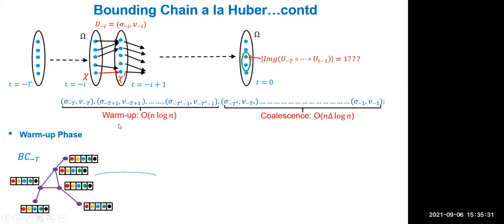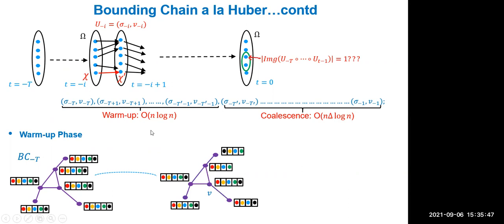Resuming after the break: Huber's algorithm runs in two phases — warmup and coalescence. At time minus T, the bounding chain is initialized with the full list of k colors at every vertex, which trivially satisfies the invariant. In the warmup phase, a random vertex is chosen and its list is updated to the first Delta plus one colors in the random permutation sigma. This continues for a hardcoded order n·log(n) duration.